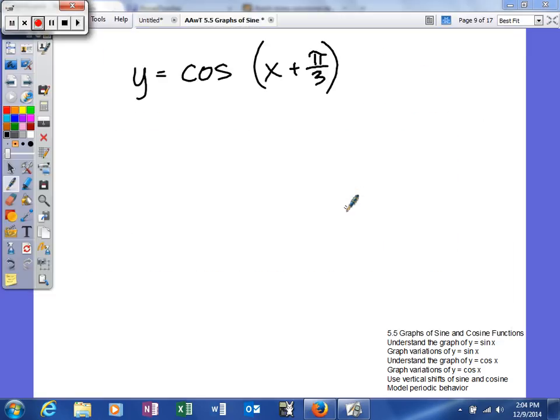Alright, this time we're going to look at the graph of cosine of x. So as you can see in this one, we do have a nice little c, so we should be shifted. Since it's plus pi-thirds, we're going to be shifted to the left pi-thirds. So let's see what our graph looks like.